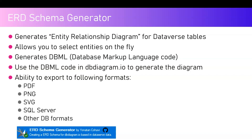You can use the DBML code in dbdiagram.io — a special website to generate the database diagram. Once you have the DBML code generated by this tool, you paste it into dbdiagram.io and from there you can generate the diagram. After generating the diagram, you have the ability to export it to PDF, PNG, SVG, SQL Server, or any other database format supported by the tool. This tool was created by Yonatan Kohavi, so thanks to Yonatan for providing this to the community.